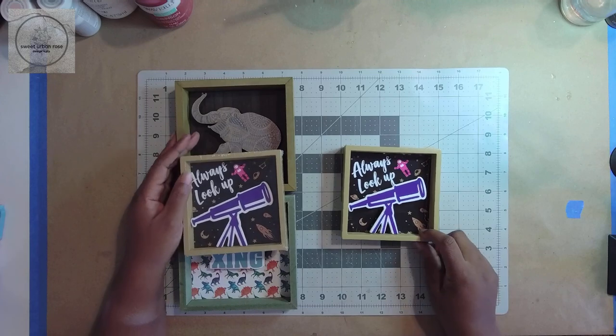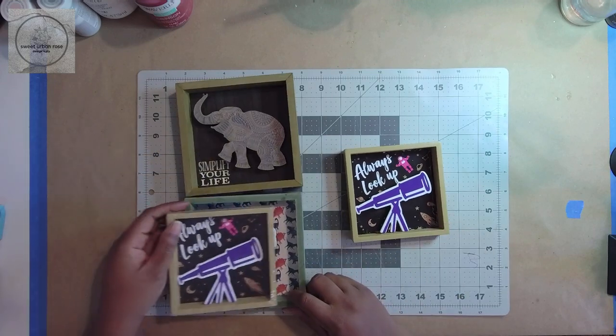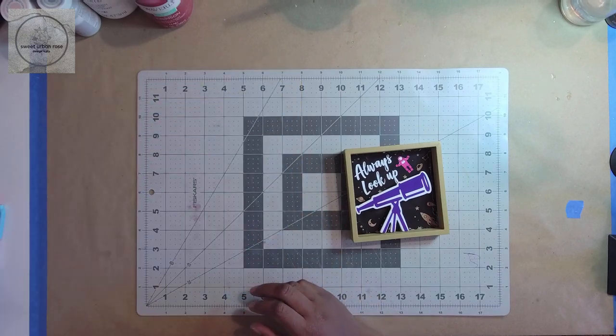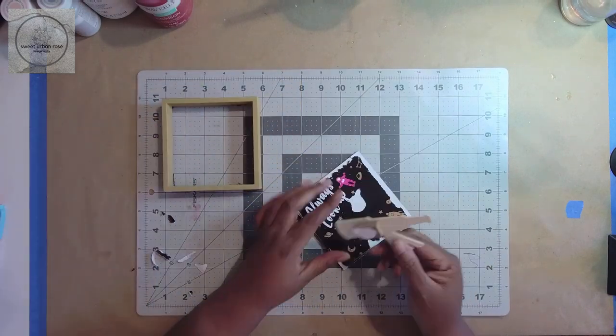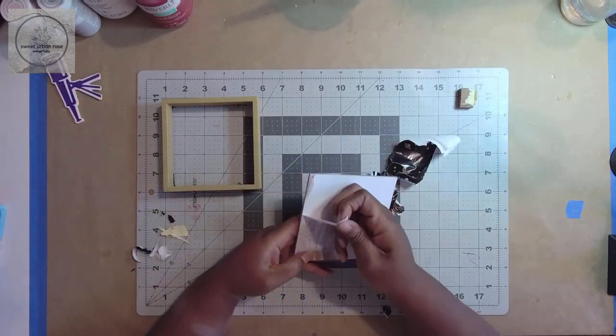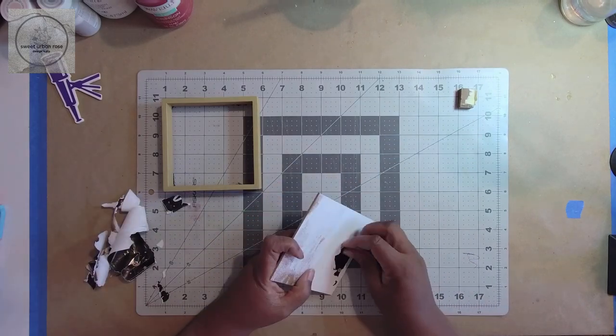I began this project with one of these shadow box frames. Dollar Tree has a couple of different sizes, and I'll be using the one that measures 5 inches by 5 inches. I carefully deconstructed the frame by pushing out the back, removing as much paper as possible, and making sure to save the riser that the telescope was mounted on.